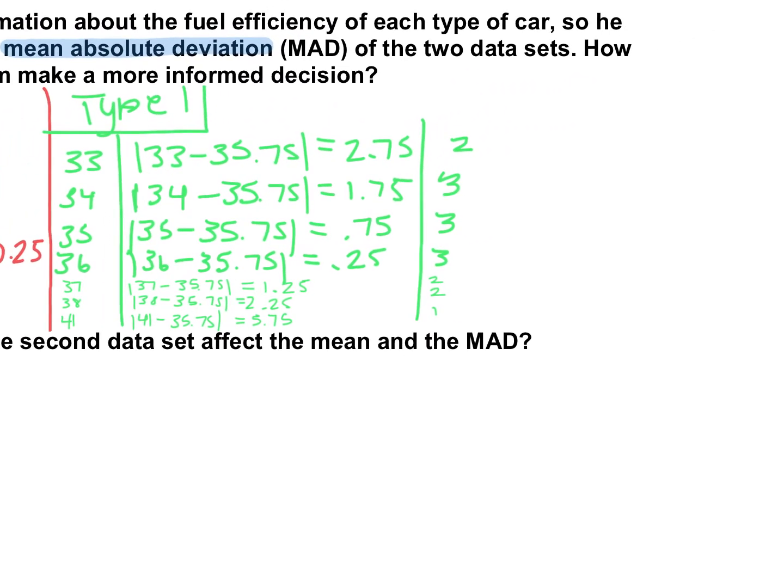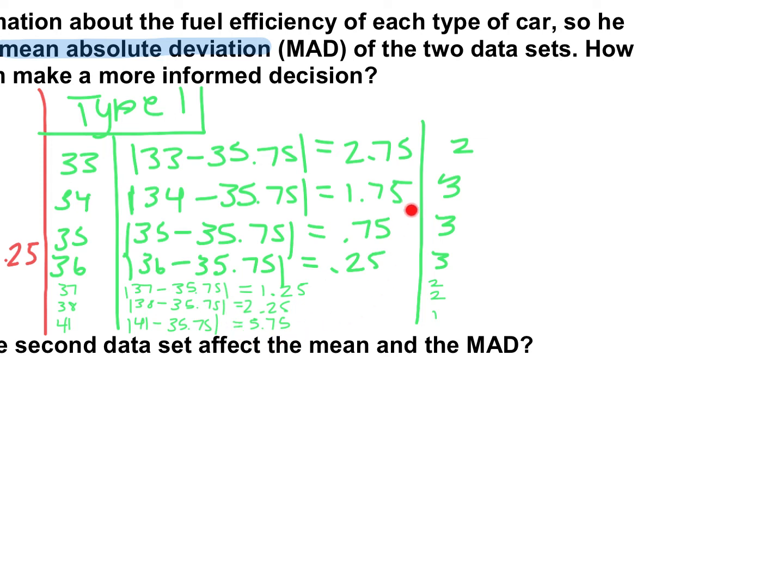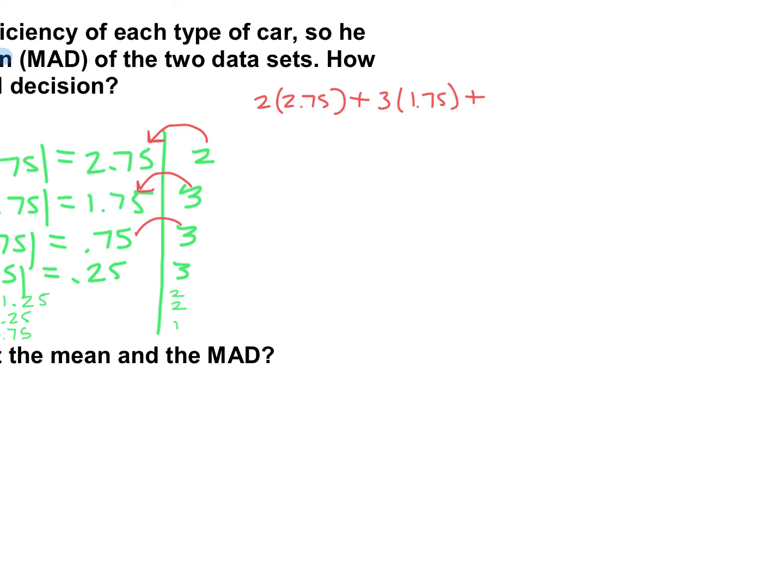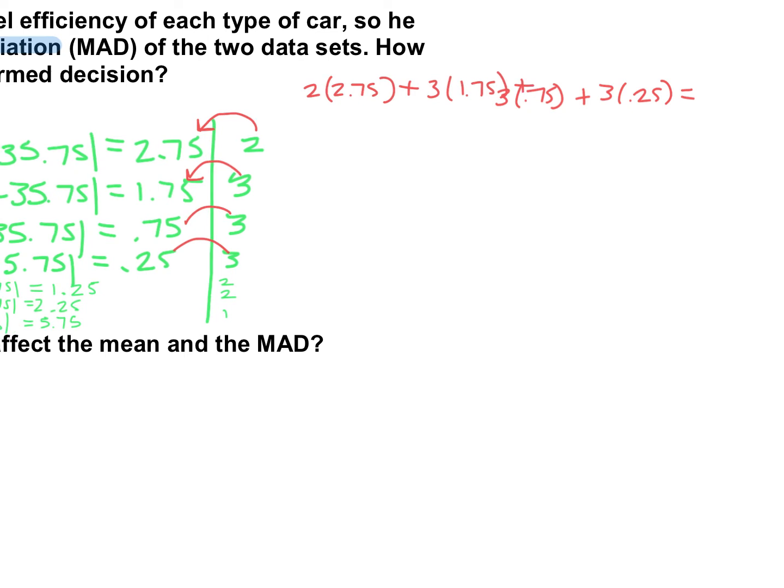So what we do now is we want to find the average of all of these numbers. So we're going to add these up and divide by how many there are. We took a little bit of a shortcut by keeping track of how many occurrences we had. So here's what that's going to look like. We had two cars that were 2.75 away from the mean, so we're going to say 2 times 2.75. We're going to add to that we had three cars that were 1.75 away from the mean, so 3 times 1.75. We had three cars that were 0.75 away from the mean.